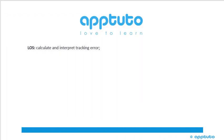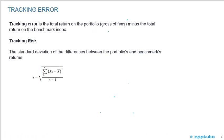This LOS is calculate and interpret tracking error. Tracking error is the total return on the portfolio, gross of fees, minus the total return on the benchmark index. So let's say that we have a portfolio and the return was 7%...